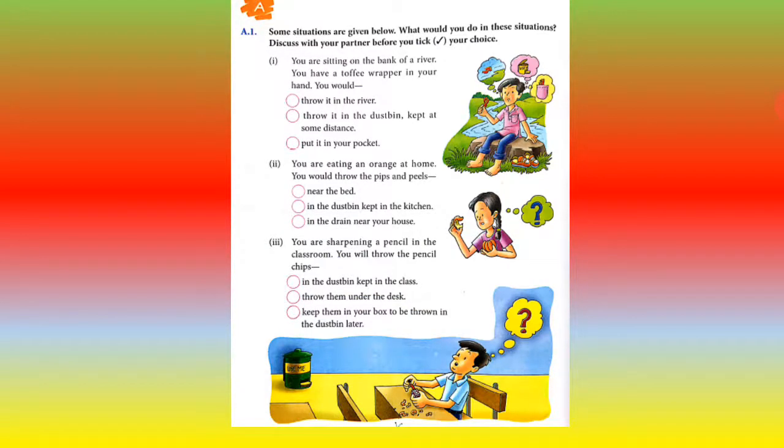The second slide we have. Some situations are given below. What would you do in these situations? If you are in these situations, what would you do? Okay? You have to tick the correct option. You are sitting on the bank of a river. You have a toffee wrapper in your hand. You would: throw it in the river, throw it in the dust bin kept at some distance, or put it in your pocket. So what you would like best, you will tick. What I would like best, I will tick: throw it in the dust bin. Okay?